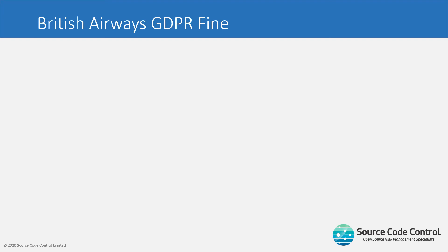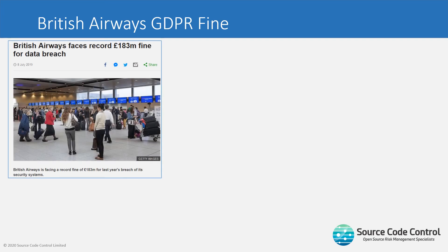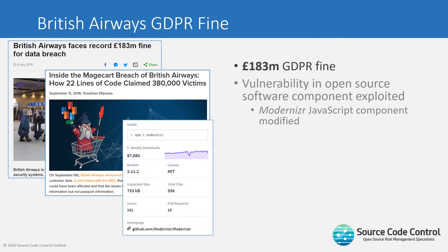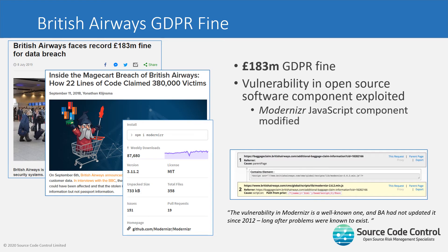How does this play out in reality? Most people will be aware that British Airways had one of the biggest GDPR fines ever — they leaked a load of customer data. What was behind that breach was hackers exploiting a vulnerability in a broadly used third party open source component called Modernizr — literally just 22 lines of code. The version in the British Airways customer portal hadn't been updated since 2012. There were multiple updates to Modernizr addressing that vulnerability, but bad actors were able to exploit the out-of-date version, which led to a 183 million pound GDPR fine.